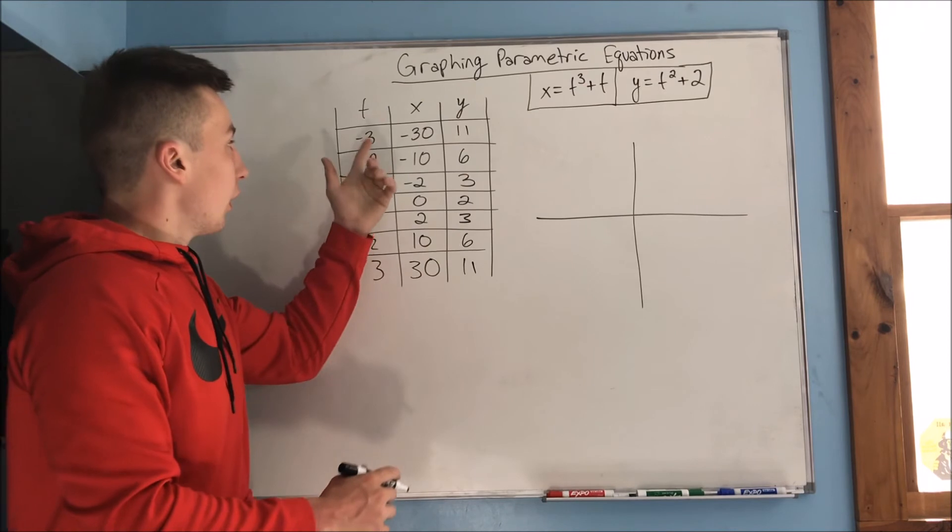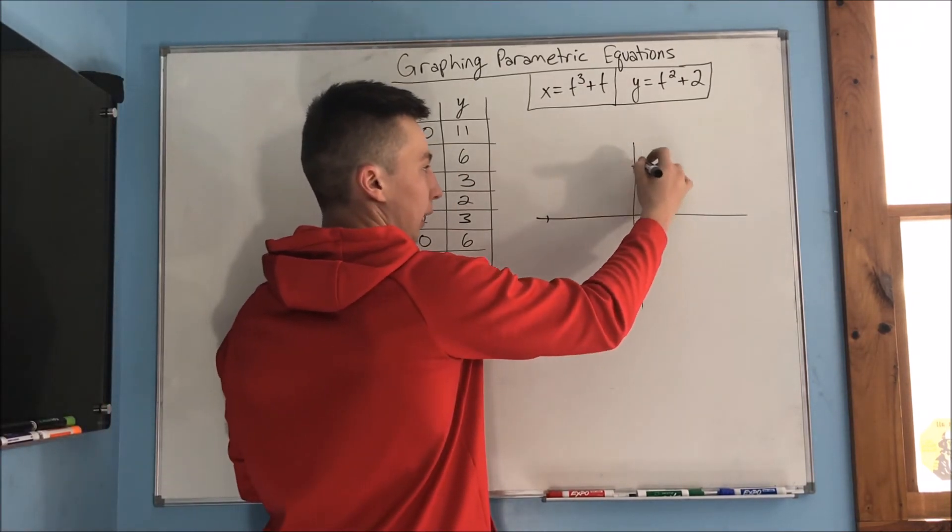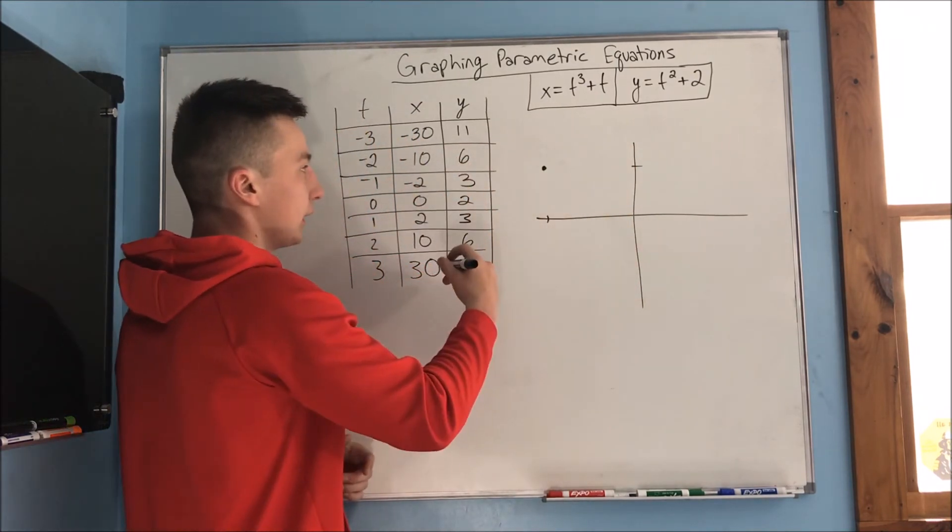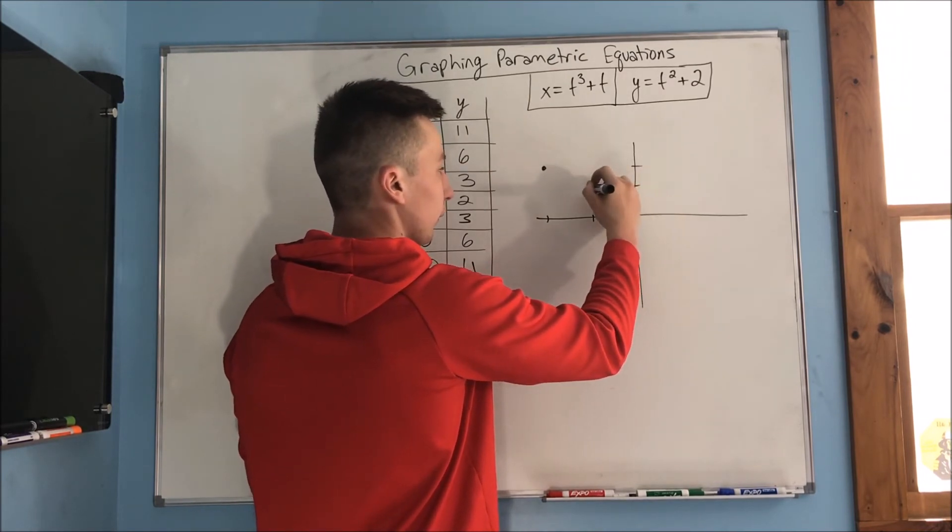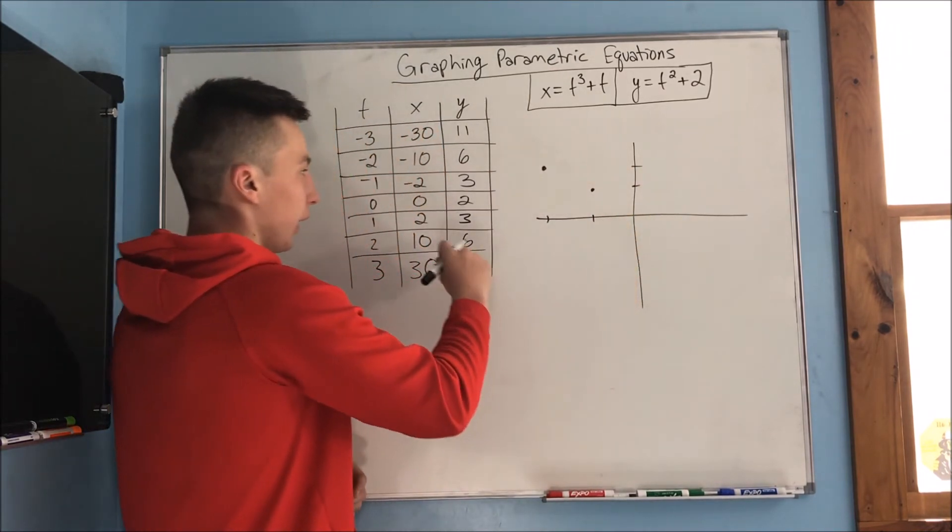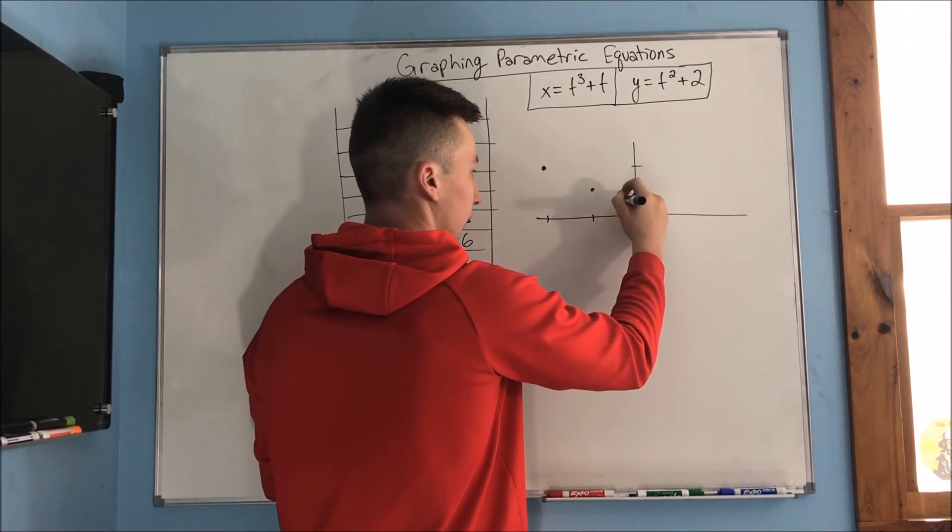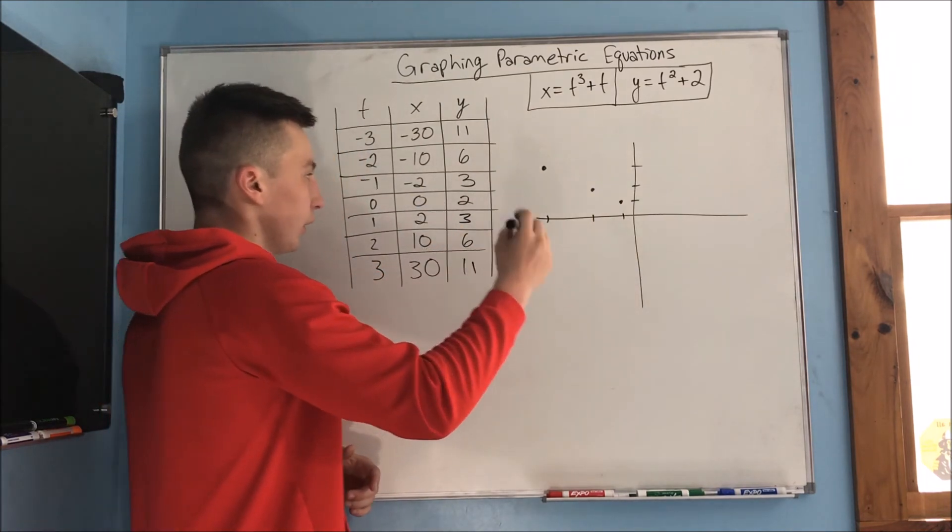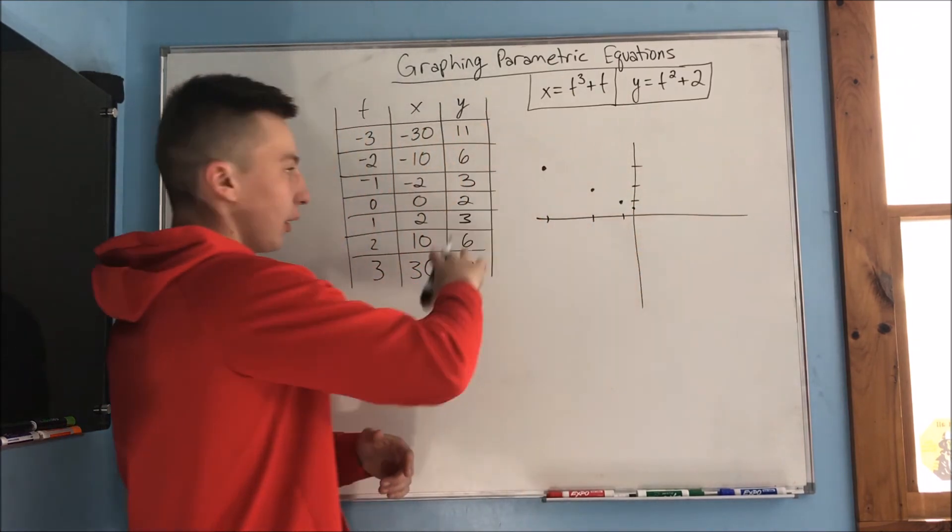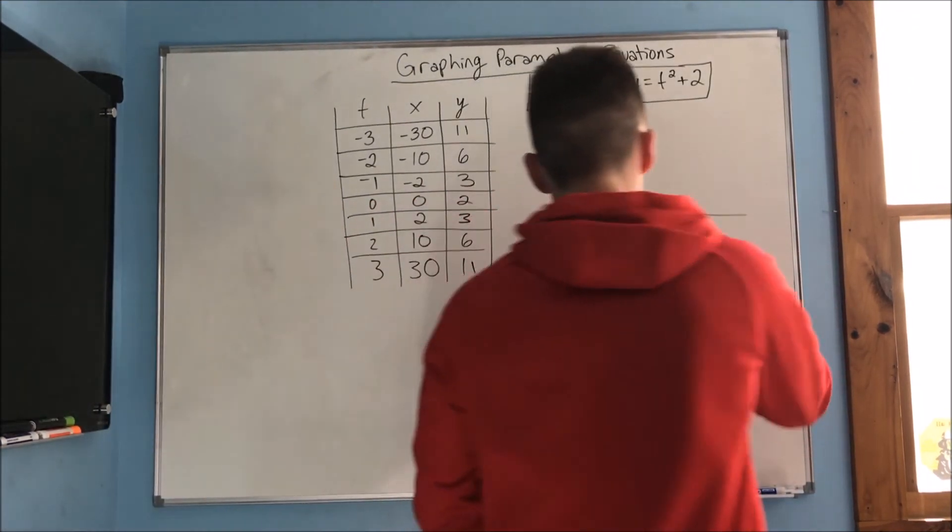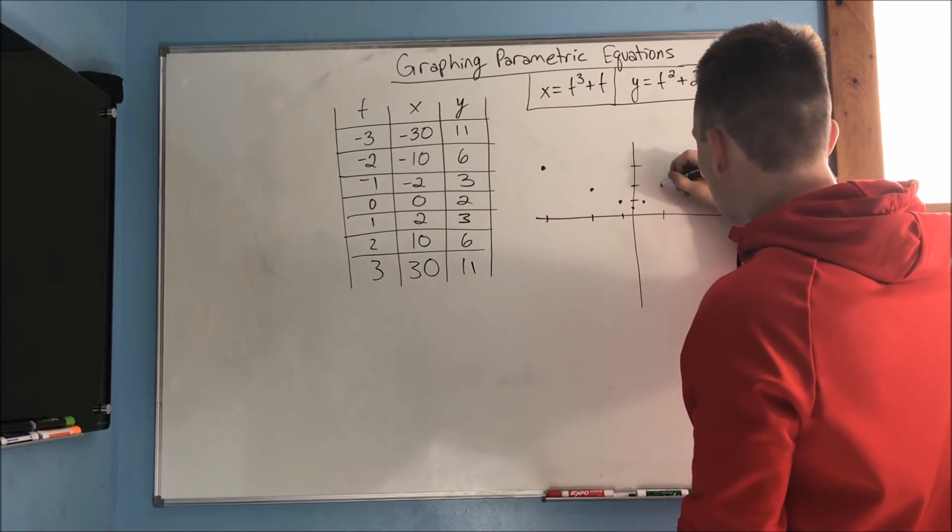So now graphing this, we have negative 30, 11. That's going to be way out here, and we can kind of put it up. And then we have negative 10, 6. You can draw that like right here. And then we have negative 2, 3. It's going to be much closer. We have a 0, 2. And then that's just going to be reflected on the other side. So we'll have something like this.